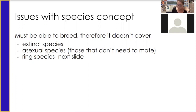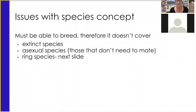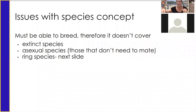As you realized last class, it doesn't cover extinct species — if something's not here anymore, we can't breed it. It doesn't cover something that's asexual. Something that's asexual reproduces by itself and doesn't need a mate. There are some very simple animals that do this, and a lot of plants do this, where just part of it can grow off and become a new plant. So if we're not testing by crossbreeding, it doesn't work.